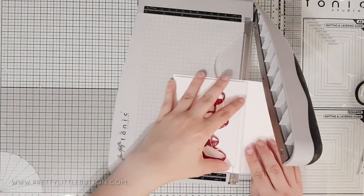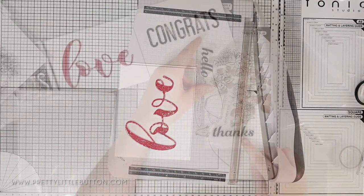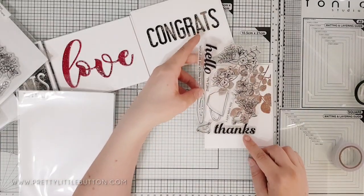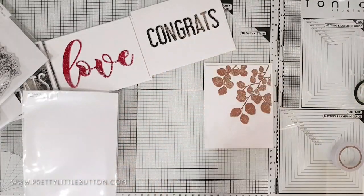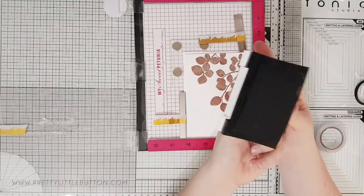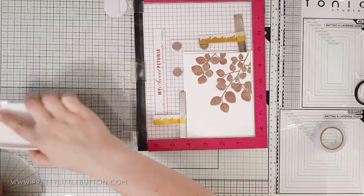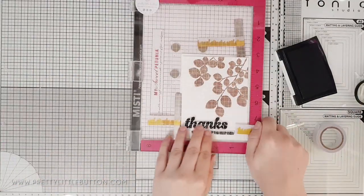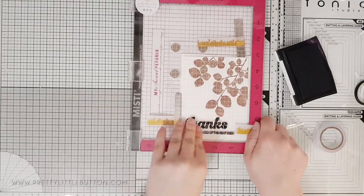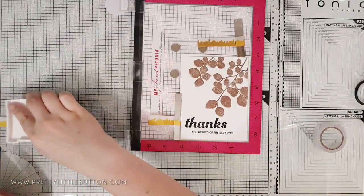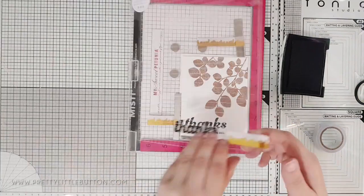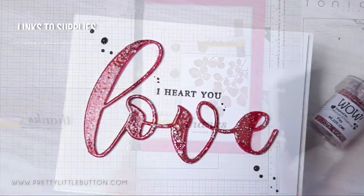I finished the card off with a stamped sentiment from the Altenew Sentiment Strips stamp set. And for the embossed leaves card I used two sentiments from the W Plus 9 Hello and Thanks stamp set, just stamping this in Versafine Onyx Black ink. And to make sure I didn't really muck up the stamping, I just used my MISTI to ensure that I aligned the sentiments straight.